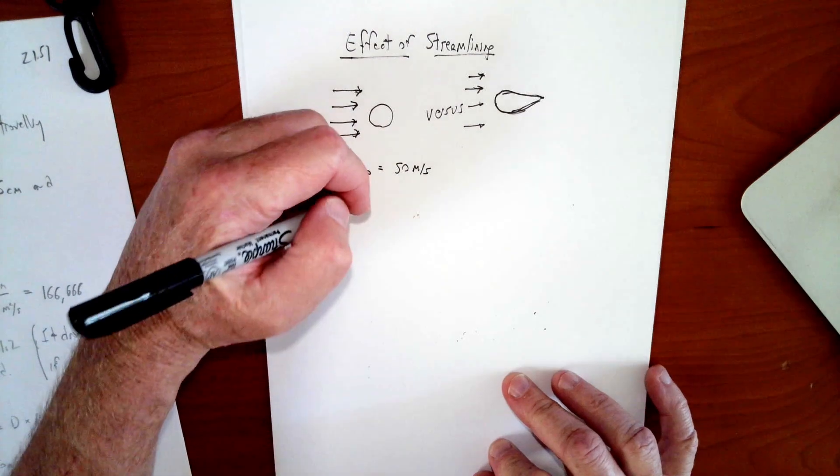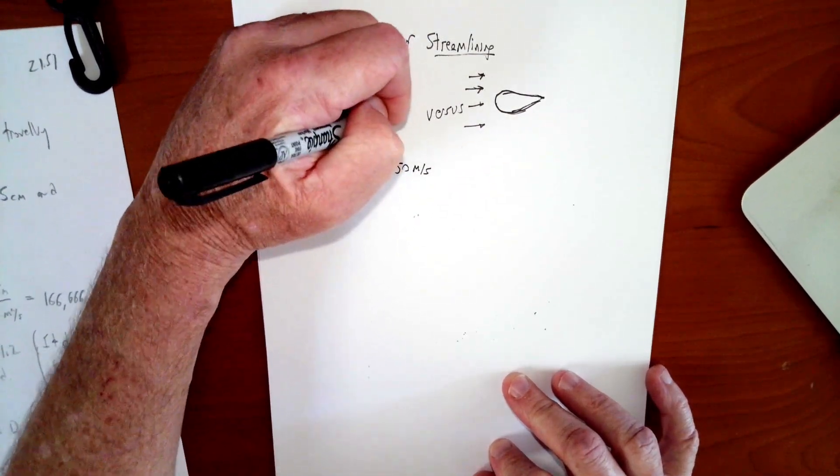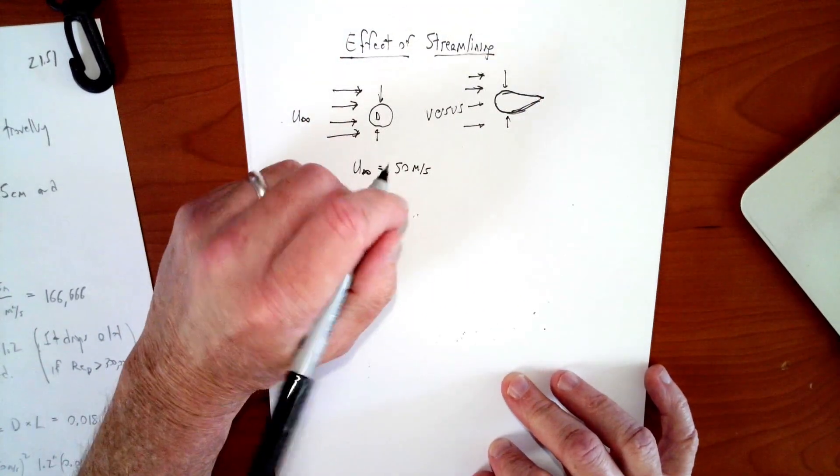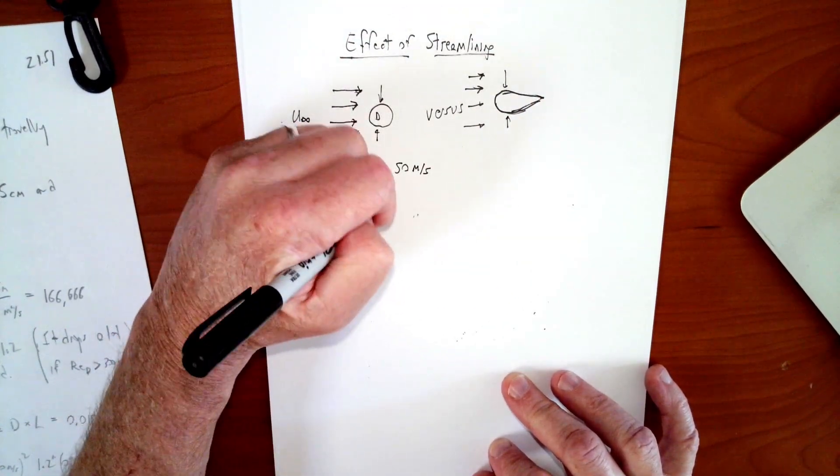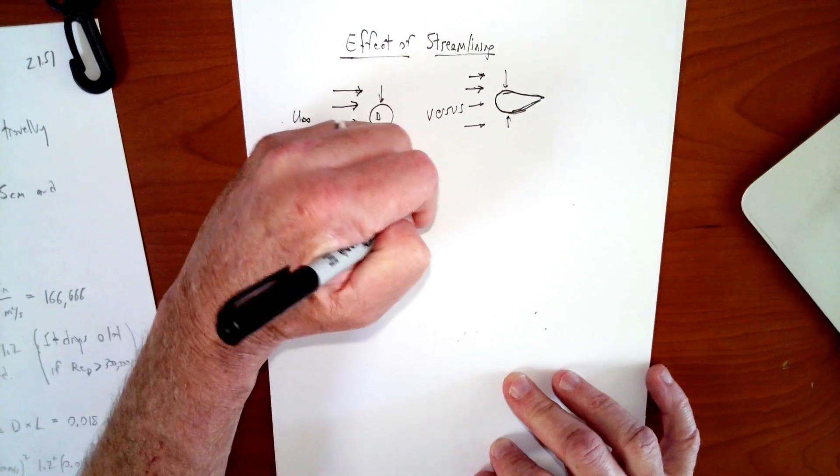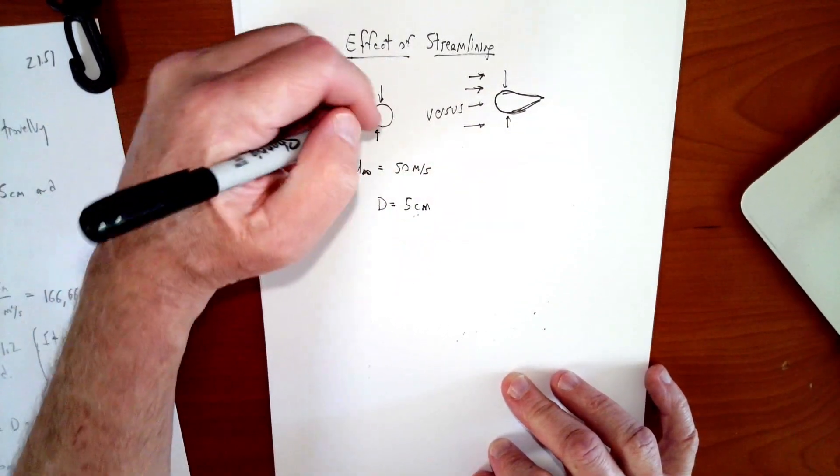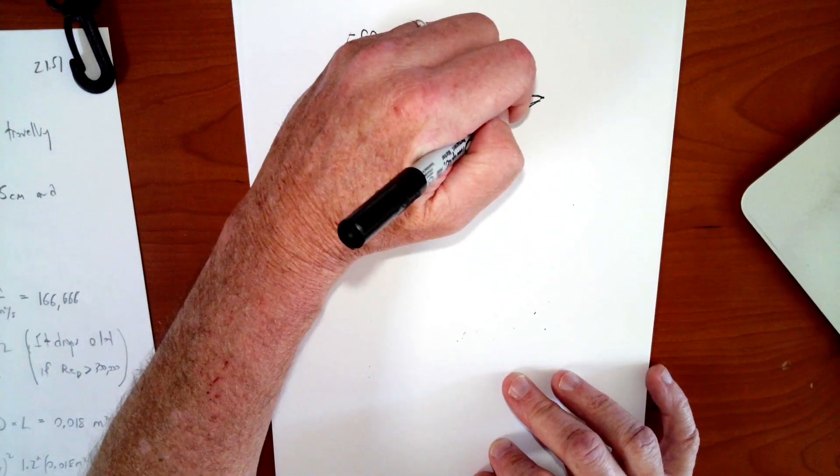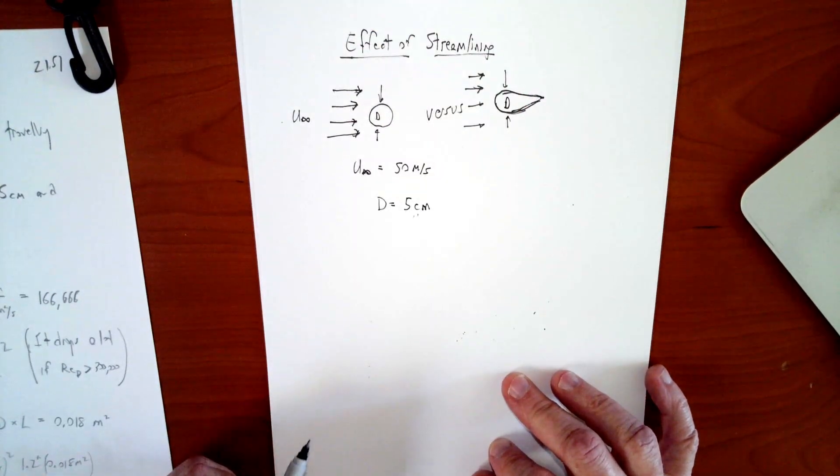We're going to say that the diameter for both struts is going to be 5 centimeters, D equals 5 centimeters. So they're both going to have the same frontal area to the wind. So this will be D, they're both the same D in that direction.